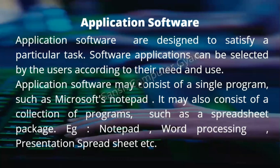Application software may consist of a single program — like Notepad, where you can only type. It may also consist of a collection of programs, such as a spreadsheet package. In Excel, for example, you can work with accounting, filtration, or create particular lists for multiple purposes. Examples of application software include Notepad, word processing, presentation, spreadsheet, and so on.